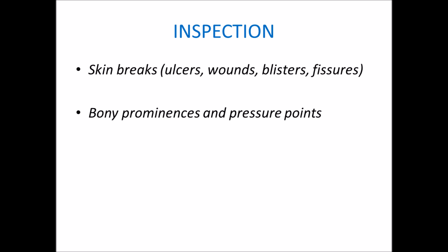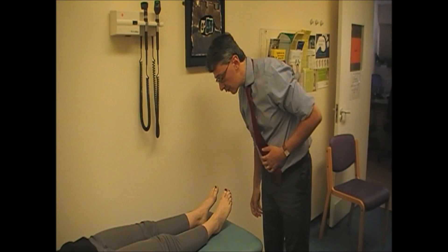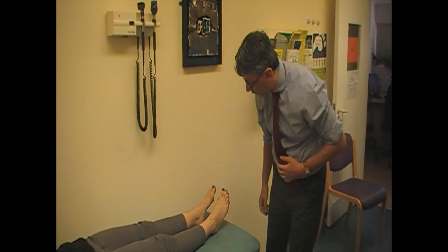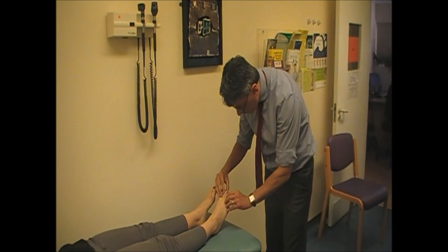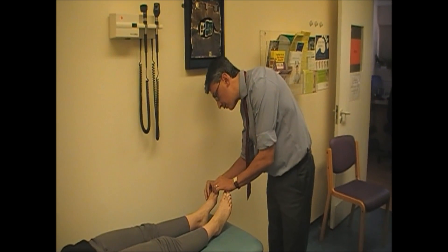In the inspection, we need to check the skin of both feet for any skin break that can be a source of infection, such as ulcers, wounds, blisters or fissures. One should also look for areas of bony prominence which may be at risk of damage through pressure or rubbing. Remember to check the heels and the space between the toes since these areas may hide a skin break otherwise not apparent.